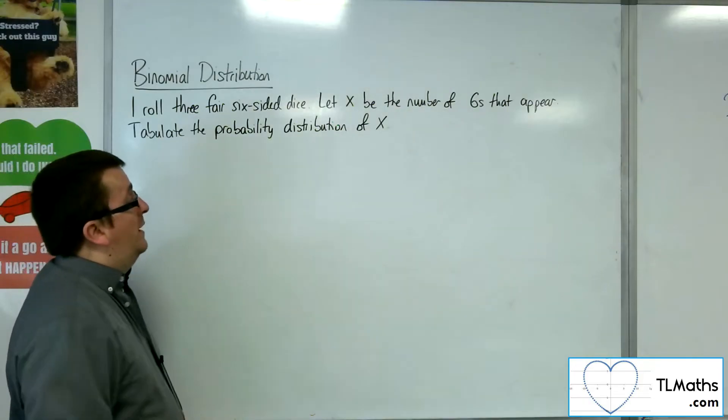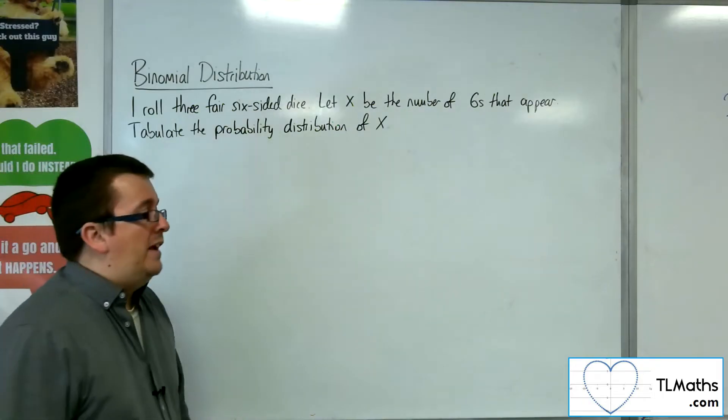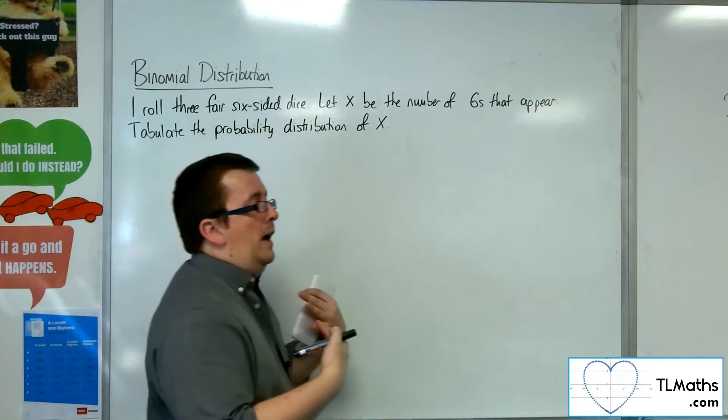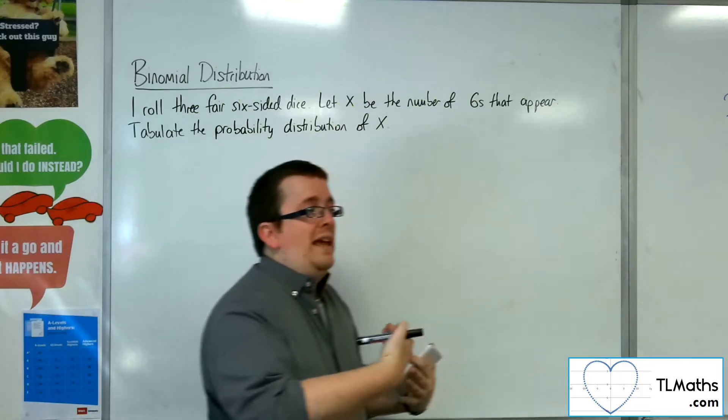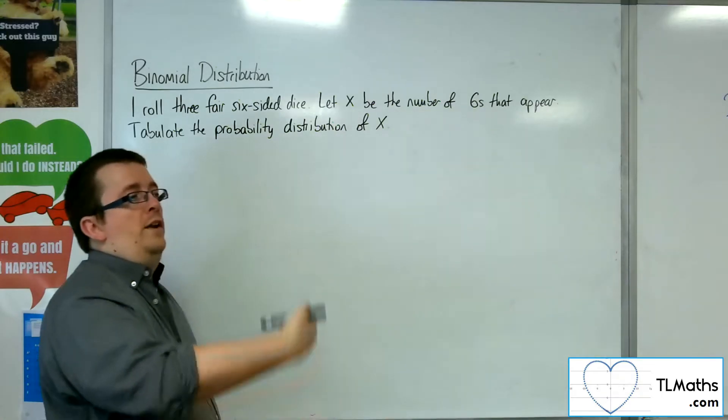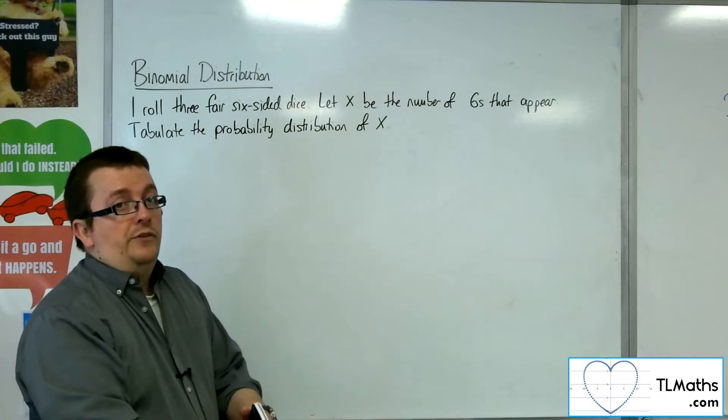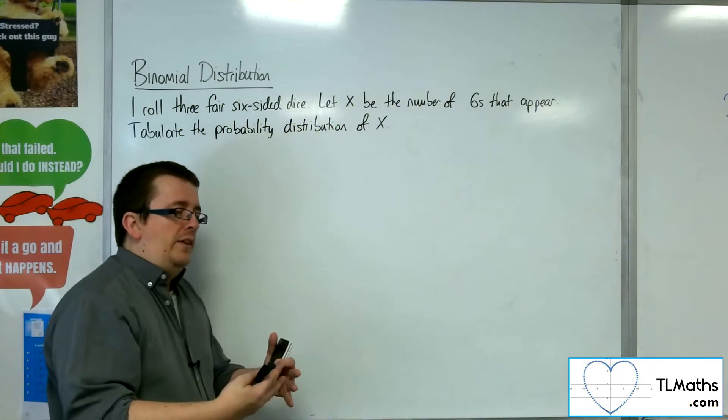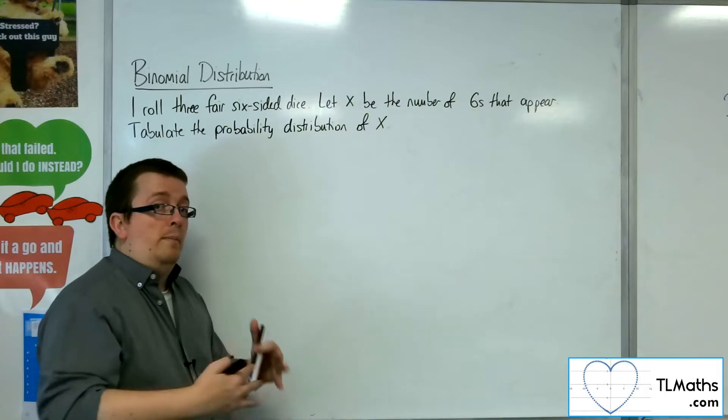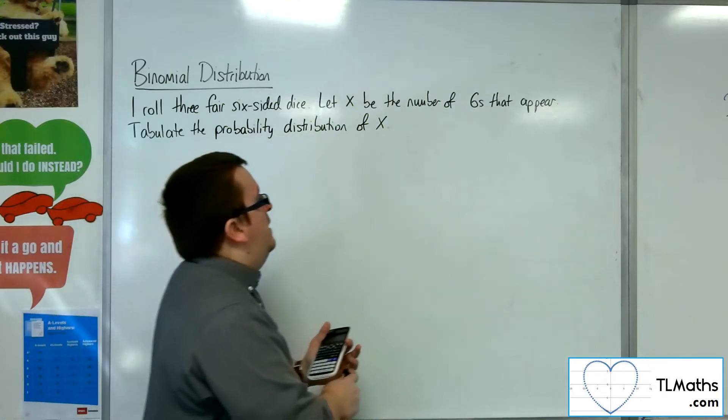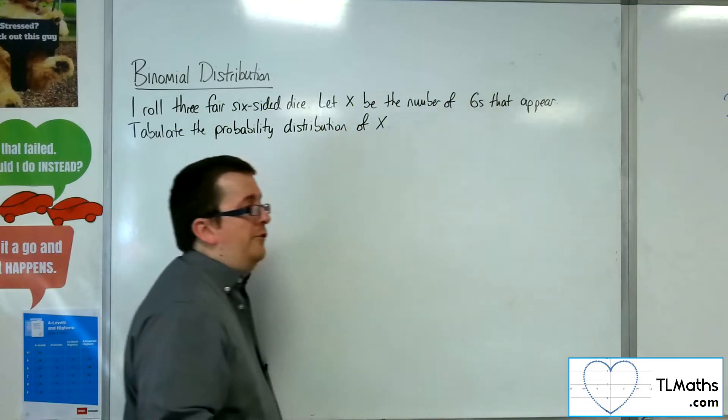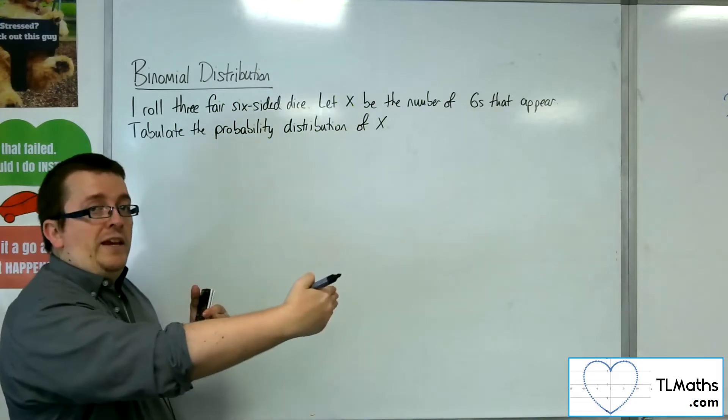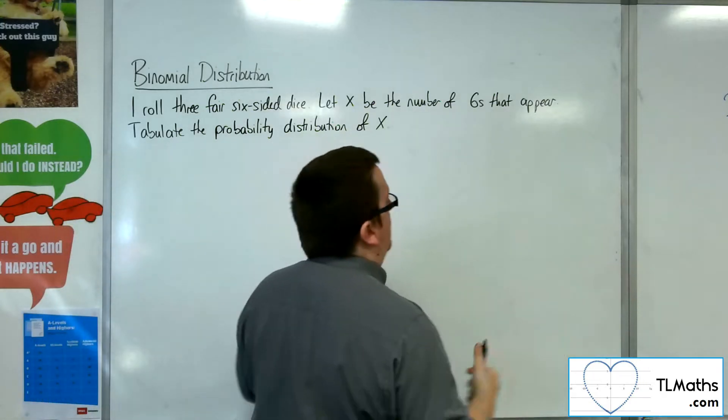Tabulate the probability distribution of x. I want to see what the probability is of getting zero, one, two, or three sixes. So if we think about this as a probability tree, then this probability tree would have three stages for the three rolls of the dice.